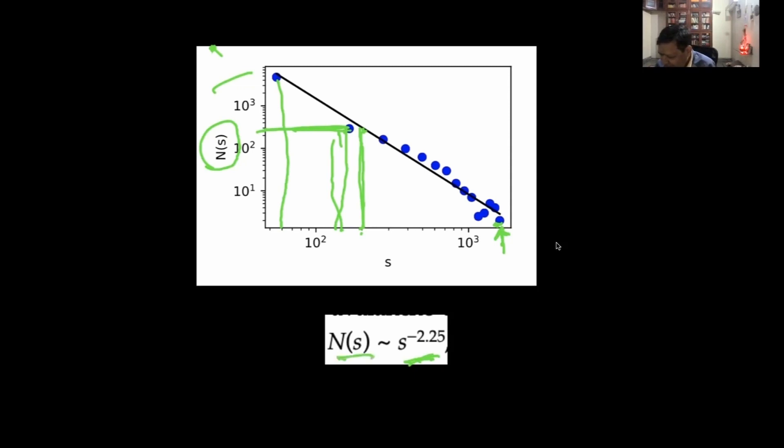In fact, N(s) versus s to the power minus 2.25 for me. But Per Bak got a different number, so I'm a bit surprised. I think we need to run it for longer time. If you run it for long time, you find this power law. This is called power law physics.